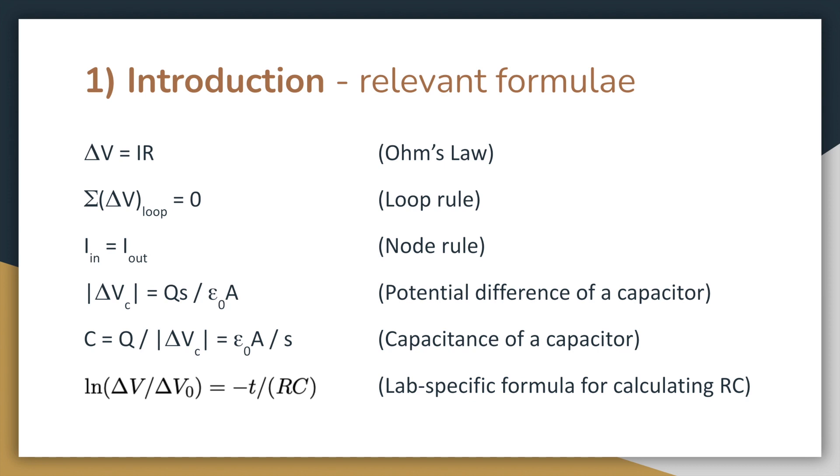I will, however, draw your attention to the last formula, which is a formula for the equation of a line, expressed in terms of potential difference, time, resistance, and capacitance. We'll be using this equation and our experimental data in part 3 of this presentation to calculate RC for the circuit, which I found to be 6, a value which was consistent across experimental and analytical results.